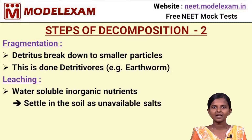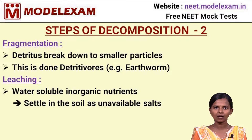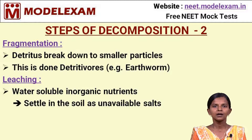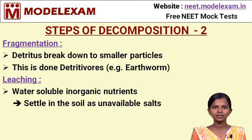The first step in decomposition is fragmentation, which is the breakdown of organic matter, or detritus, into smaller particles. This is done by organisms called DTTOs, for example earthworms. The next step is leaching, which is the production of water-soluble inorganic nutrients from litter on the soil. These inorganic nutrients settle down in the soil as unavailable salts, which cannot be used by plants.